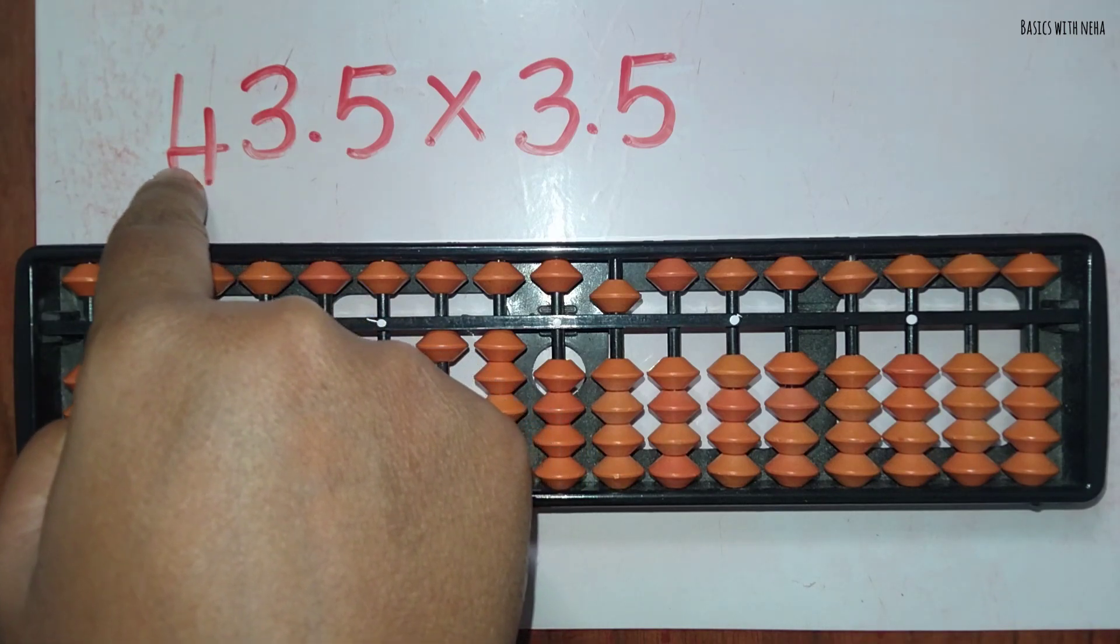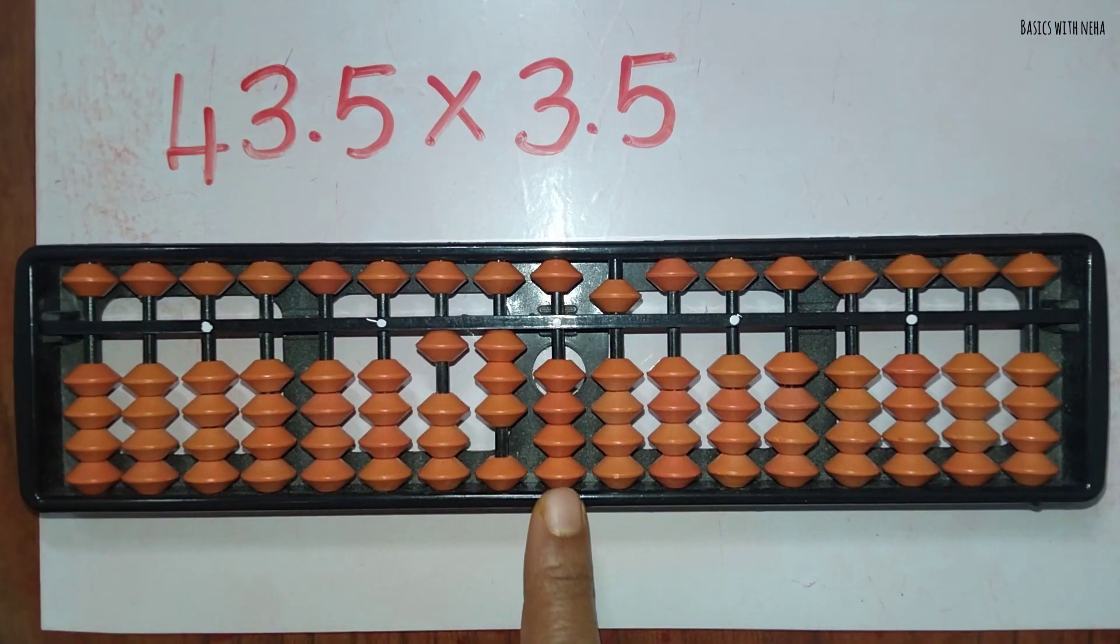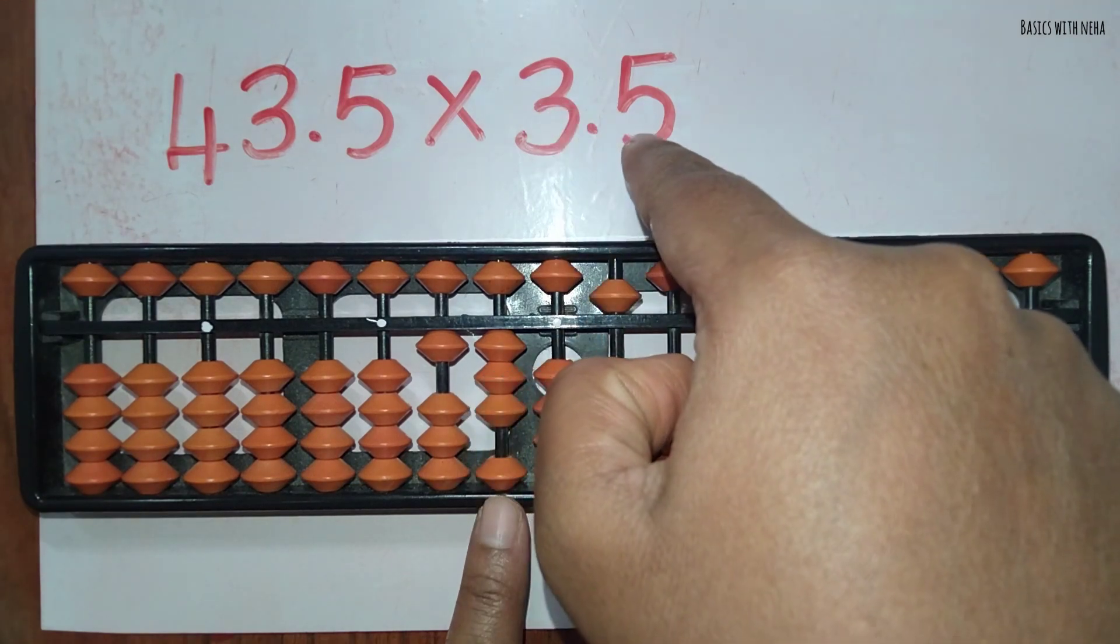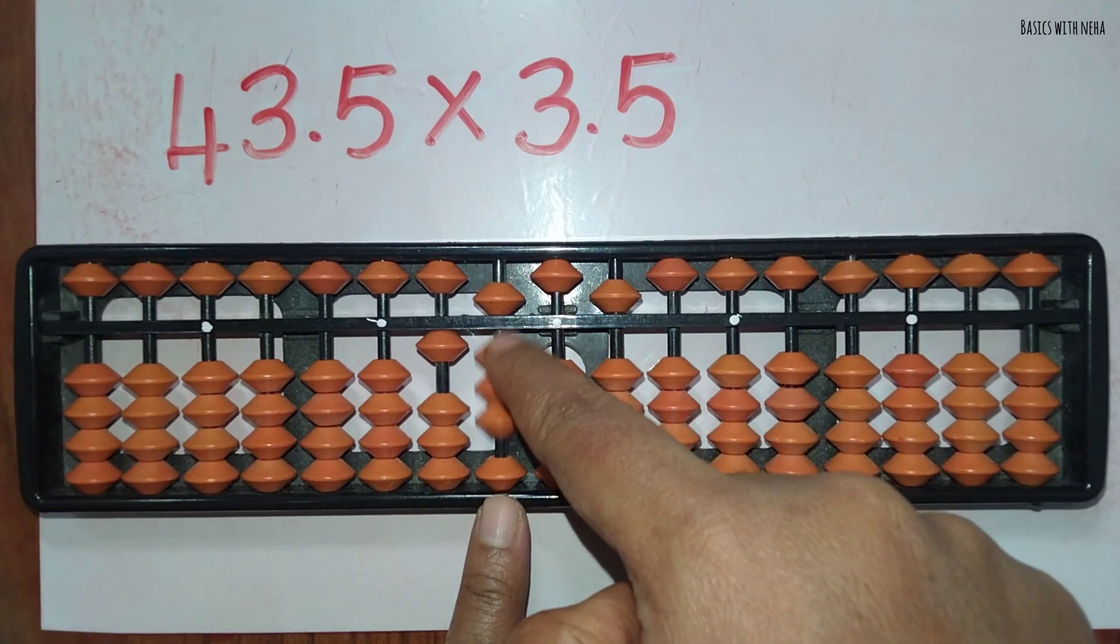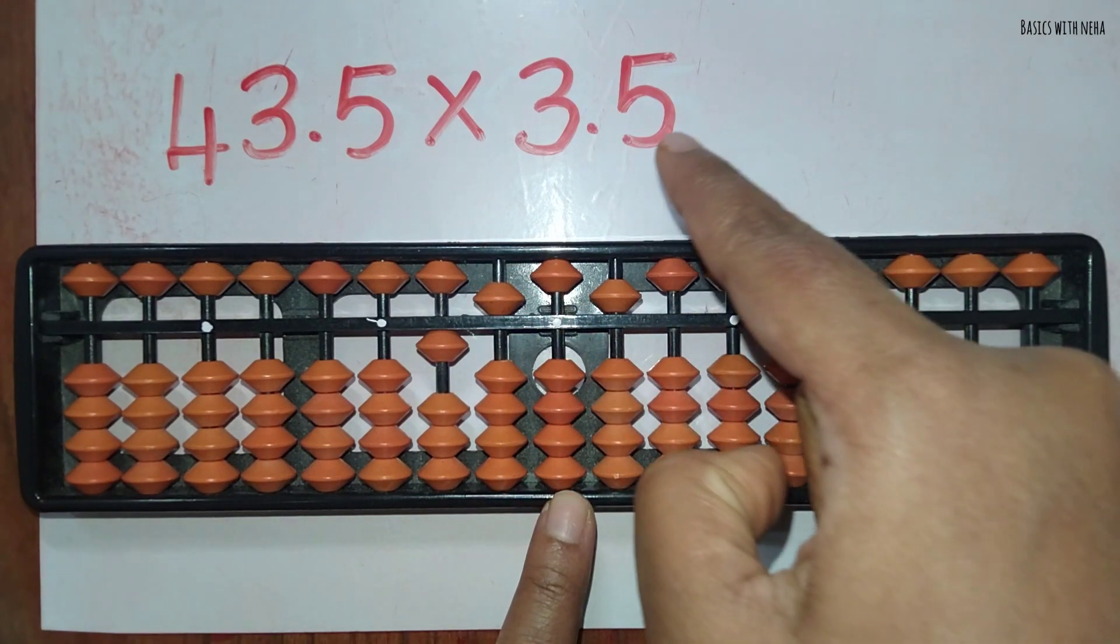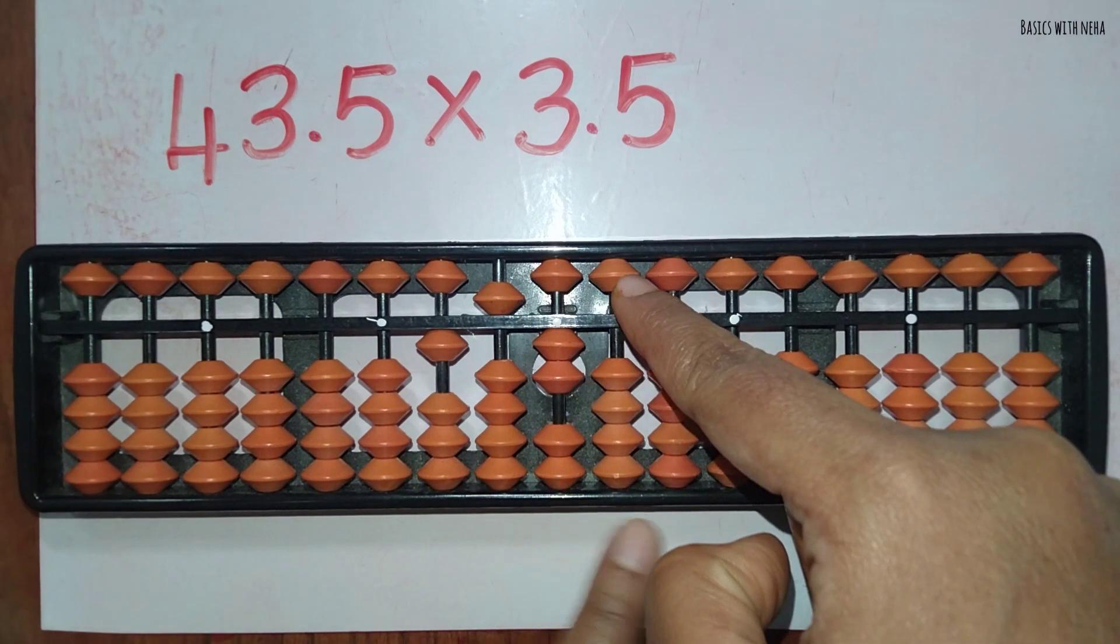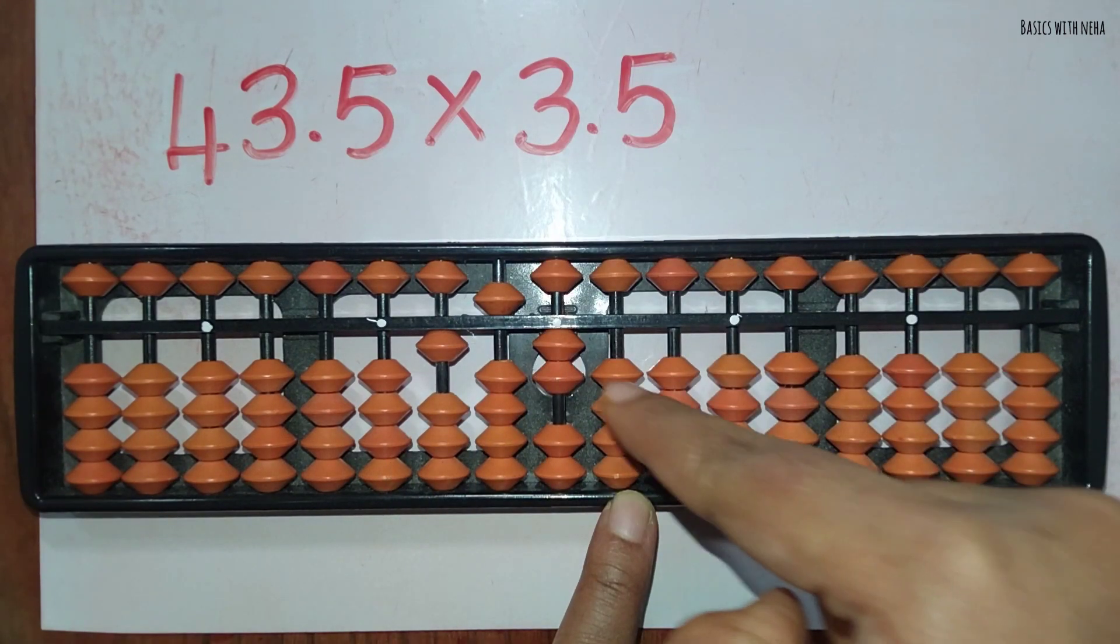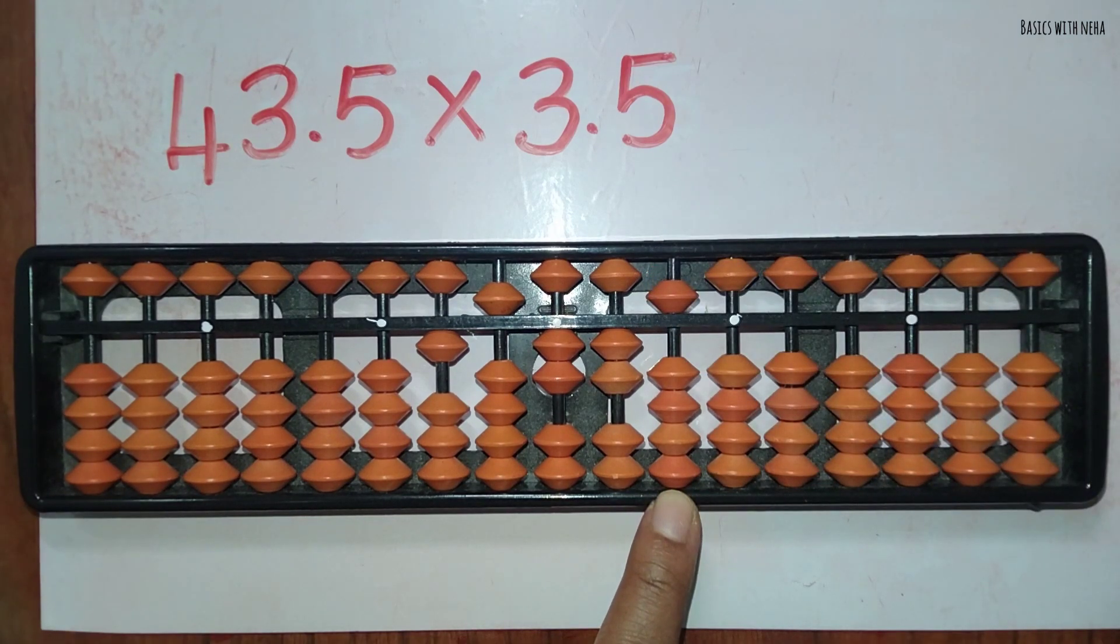Now you have to consider only 43. Take only 43, so that is two numbers. You should start your answer from the second rod, from here. Okay, again, now you should start from 5. Five fours are 20: 2 and 0, 20. Five threes are 15: 1 and 5, 15. Five fives are 25: 20 and 5, 25.